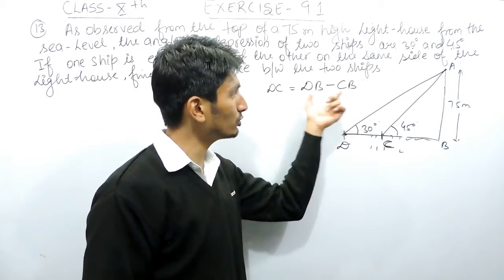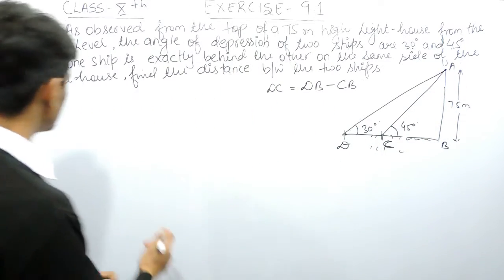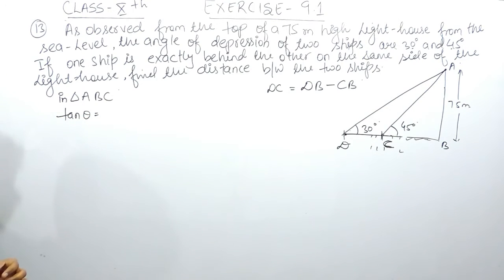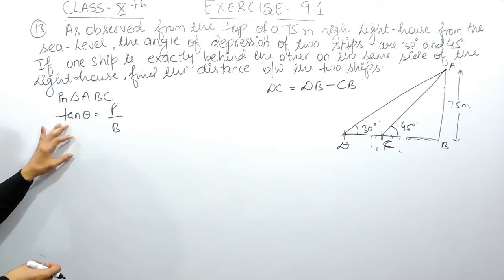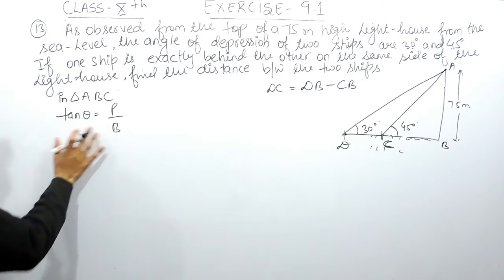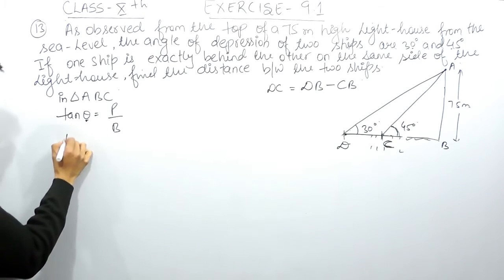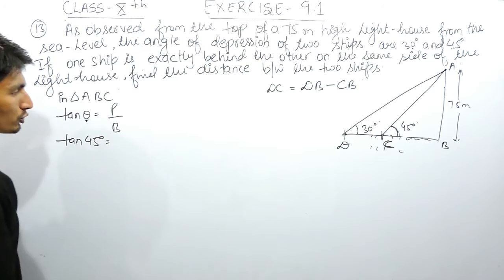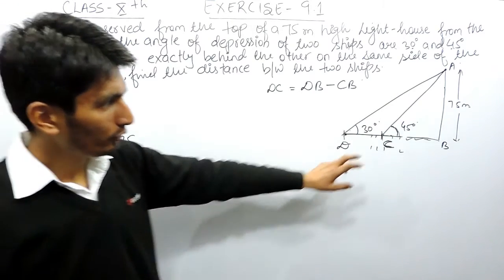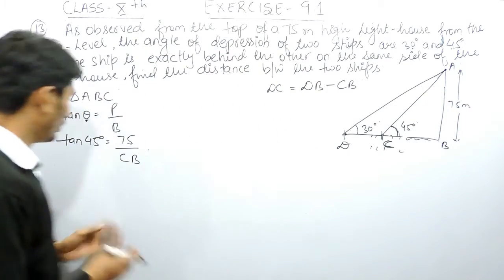To find these two sides, we use the ratio for tan theta. In the first triangle ABC, tan theta equals perpendicular upon base. You must remember this ratio from the previous chapter. For the first triangle ABC, theta is 45 degrees, so tan 45 equals perpendicular upon base. The perpendicular is 75 meters and the base is CB. The value of tan 45 is 1.